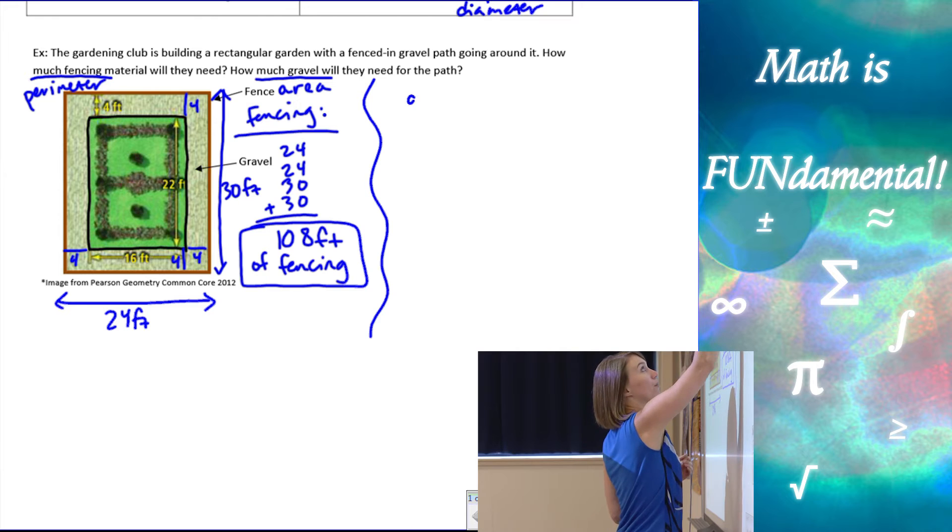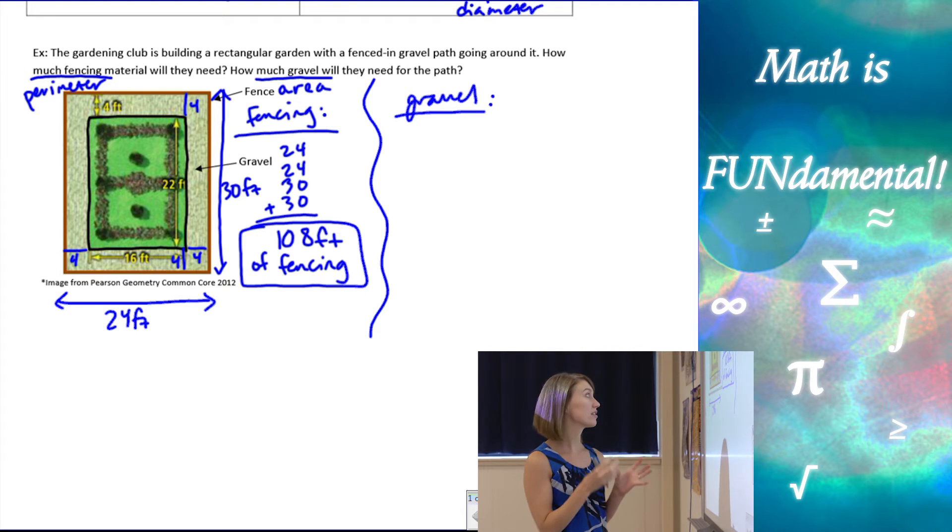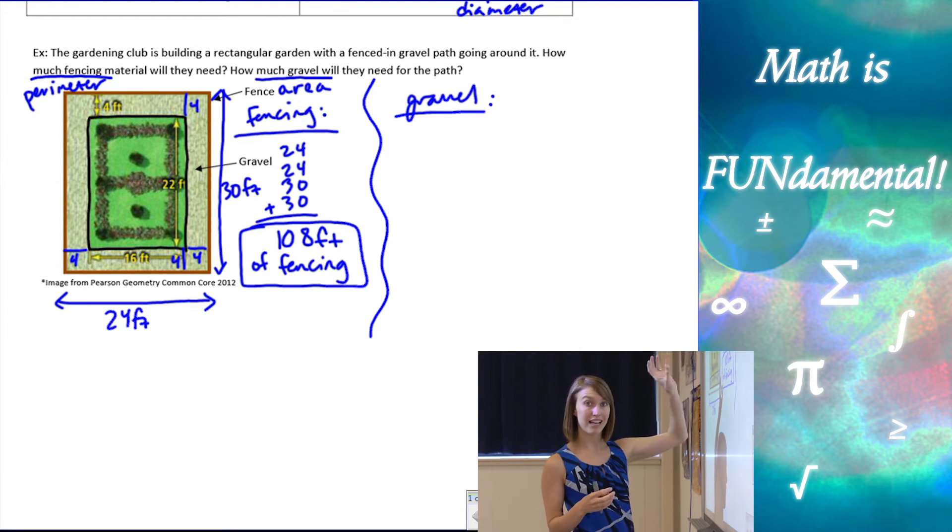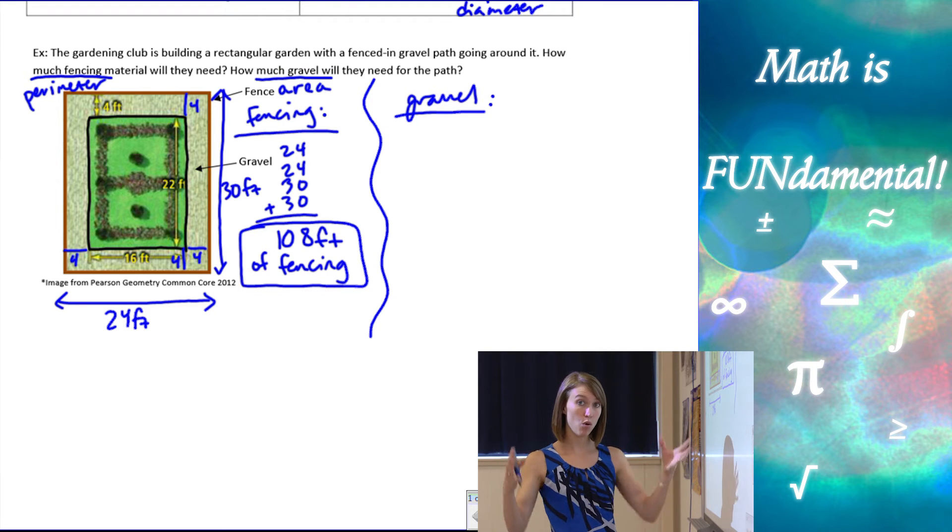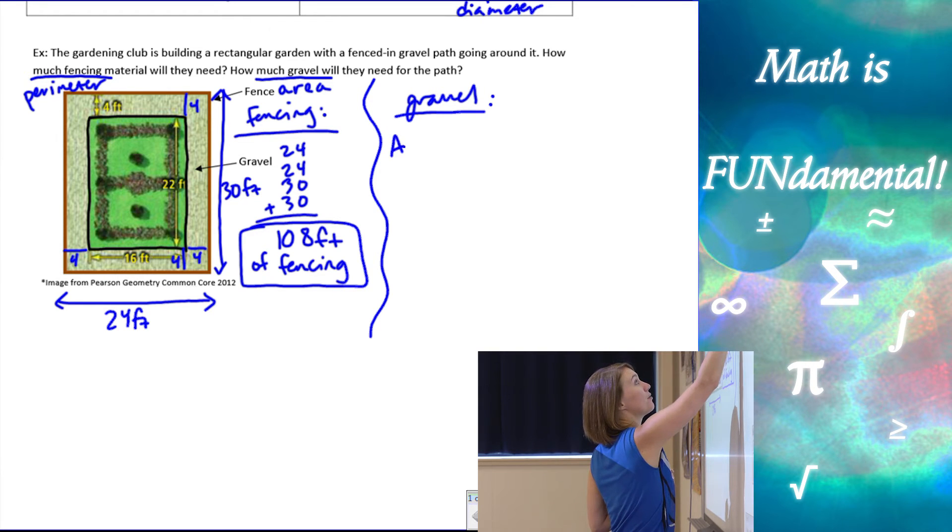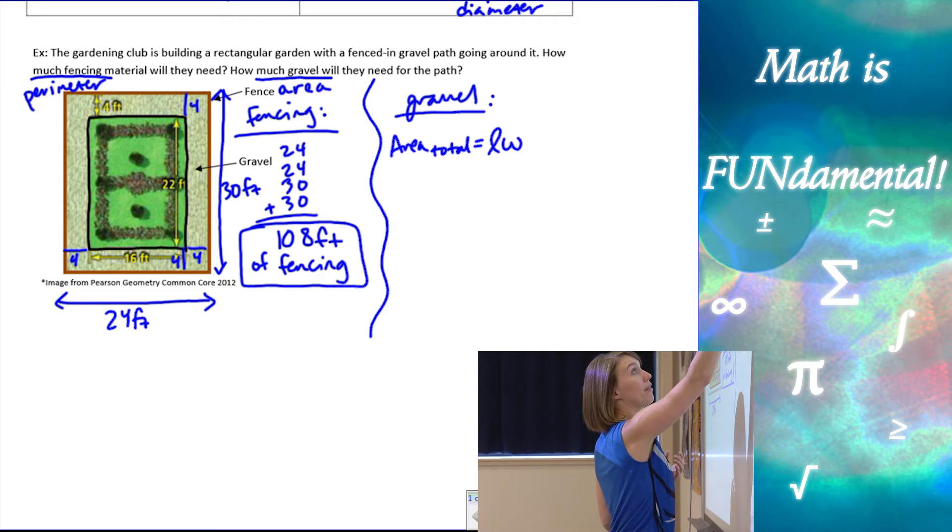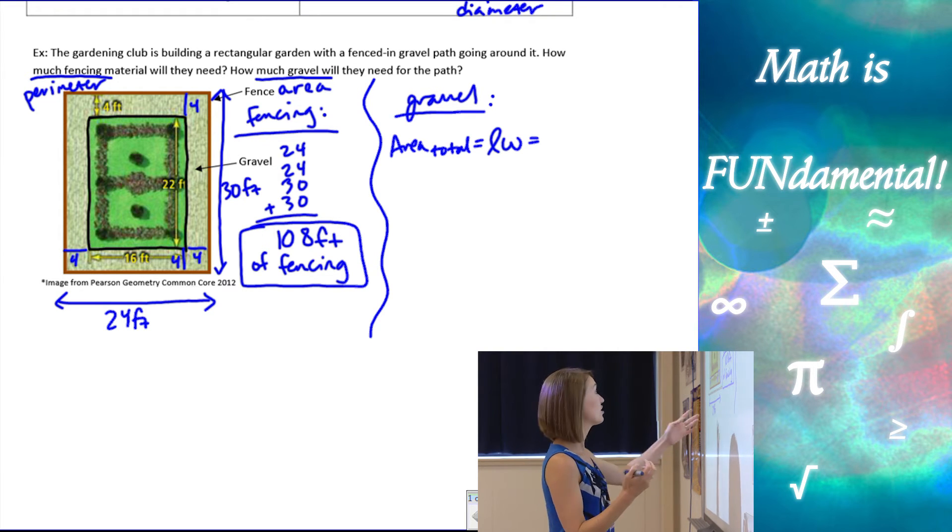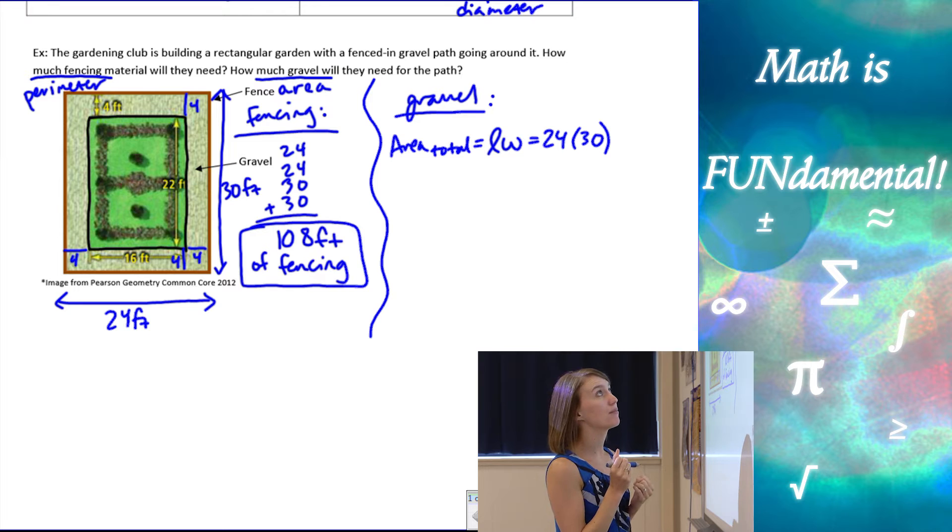Now let's talk about the gravel. The gravel is going to be the area of just that part of our garden with the gravel. So it doesn't include the area on the inside where it's grass. So what we can do is we can find the area of the whole part and then take out or subtract the area of the garden itself. So let's do area total. We know our area formula for a rectangle, which is length times width. And my length and width of the total space is 24 times 30.